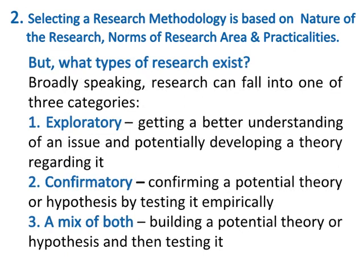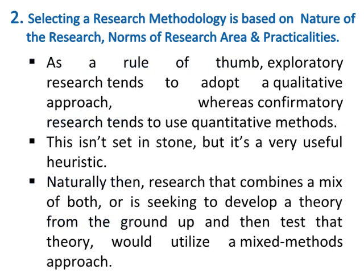But what types of research exist? Broadly speaking, research can fall into one of three categories: number one is exploratory — getting a better understanding of an issue and potentially developing a theory regarding it; number two is confirmatory — confirming a theory or hypothesis by testing it empirically; and number three is a mix of both. As a rule of thumb, exploratory research tends to adopt a qualitative approach, whereas confirmatory research tends to use quantitative methods.